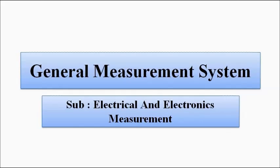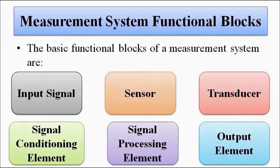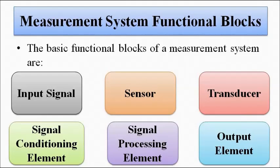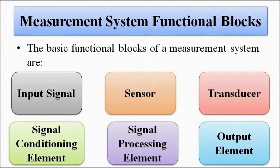The measurement system consists of various blocks and stages. We can name them as: first, the input signal; then the sensor or transducer, which is the signal conversion element; then the signal conditioning and processing elements, used for purposes such as amplifying the signal, filtering the signal, noise removal, and other things; and finally the display element or output element. We are going to discuss these one by one.